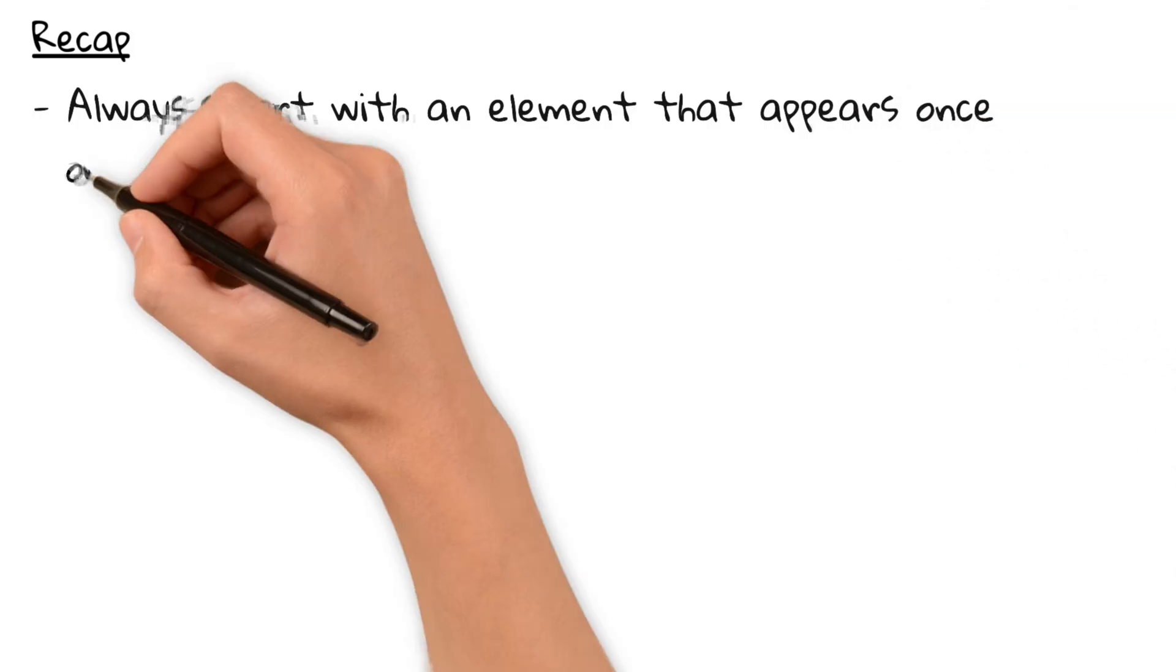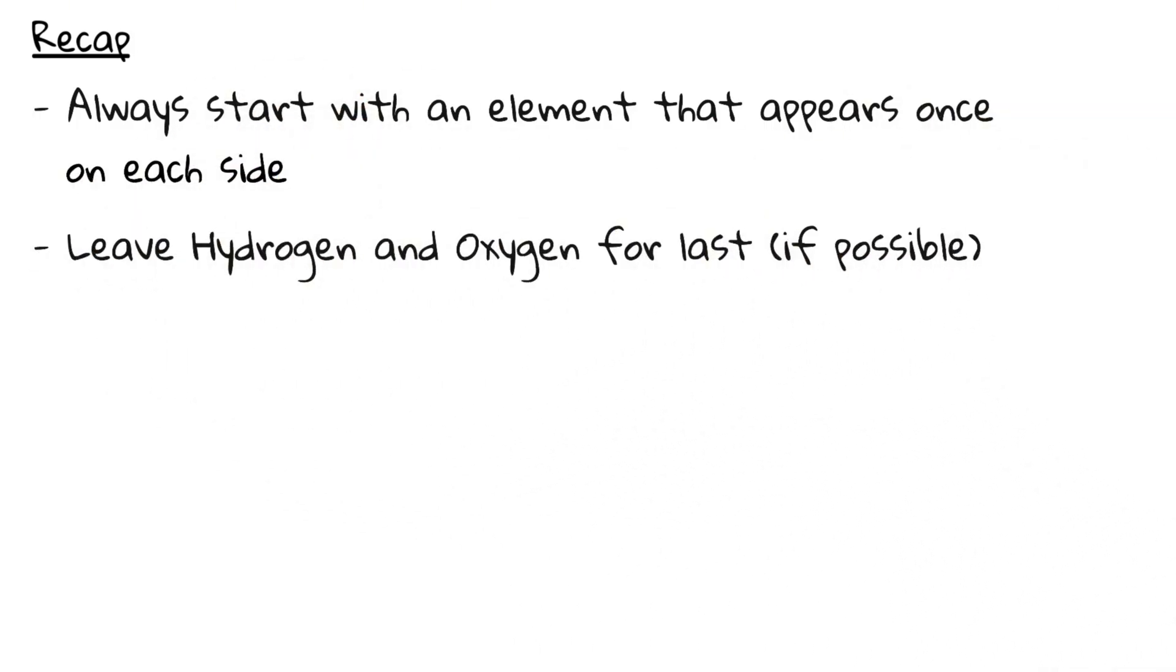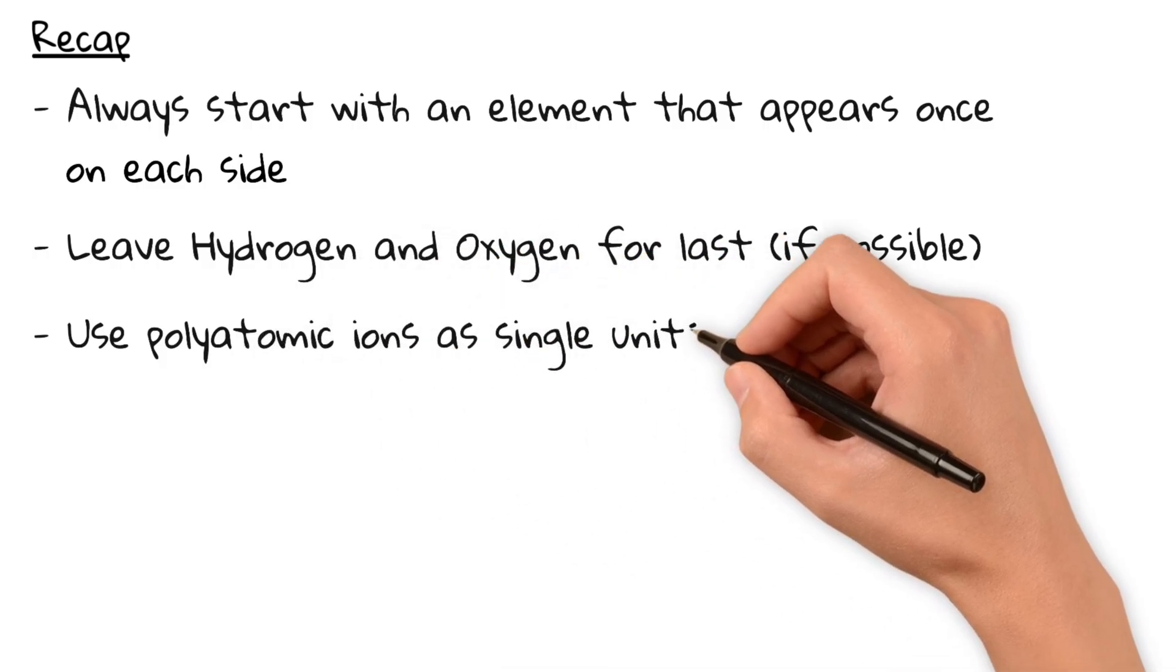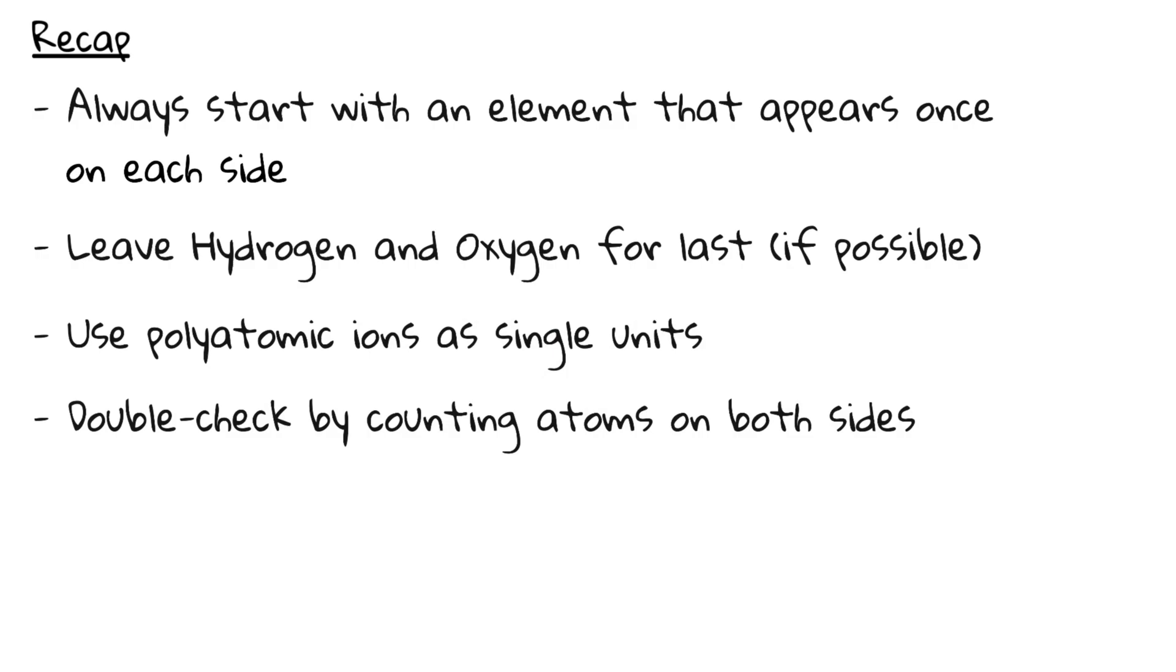So let's recap. Always start with elements that appear once on each side. Leave hydrogen and oxygen for later. Use polyatomic ions as single units where possible and double check by counting atoms on both sides in the end.